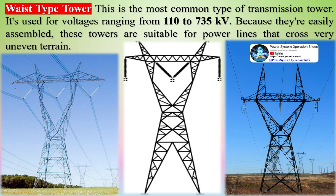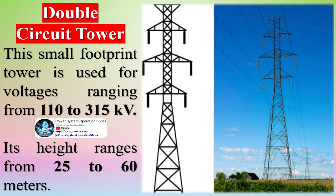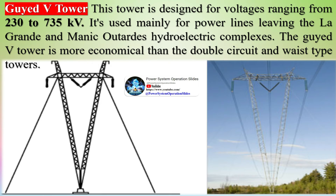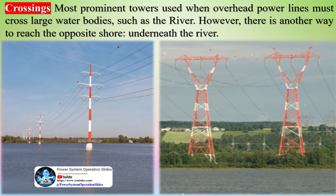The waste-type tower is the most common type of transmission tower, used for voltages ranging from 110 to 735 kV. Because they are easily assembled, these towers are suitable for power lines crossing very uneven terrain. The small footprint double-circuit tower is used for voltages from 110 to 315 kV. The Guide V tower is designed for voltages from 230 to 735 kV, used mainly for power lines leaving the La Grande and Manic-Outardes hydroelectric complexes, and is more economical than double-circuit and waste-type towers.